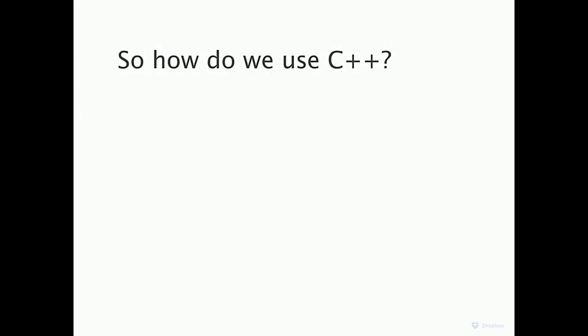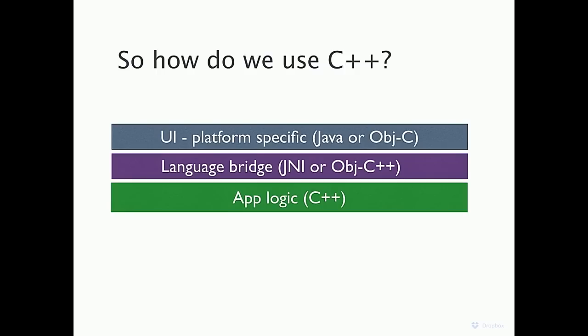We use a three-tier architecture: the UI layer written in platform-specific native code (Java or Objective-C), a language bridge handling marshaling and unmarshaling across the boundary (JNI or Objective-C++), and the actual app logic in the cross-platform C++ layer. Keep the UI layer super thin — that's the code you're writing twice, and writing things twice is bad. It does allow native look and feel. The language bridge should also be kept thin. Andrew will be talking shortly about tooling we've built that helps with this.